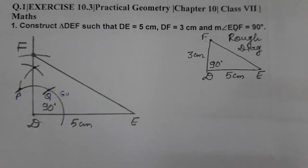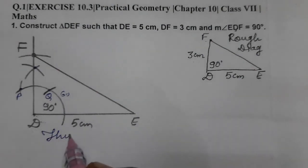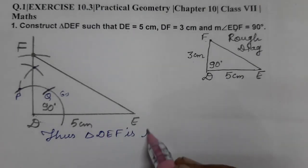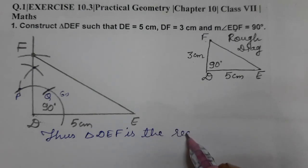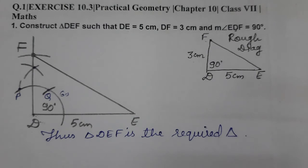So we will write: thus triangle DEF is the required triangle. And if you need to write the steps of construction, then also you can write whatever you are doing. Those are the steps of construction you can easily write.